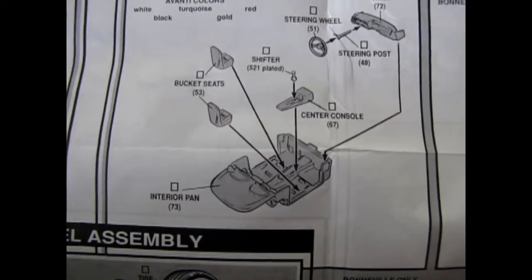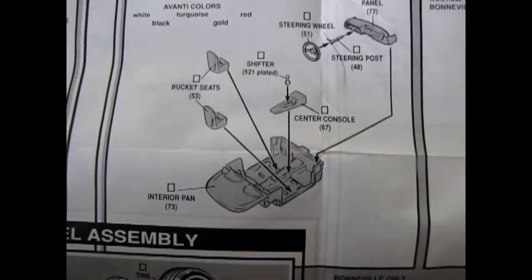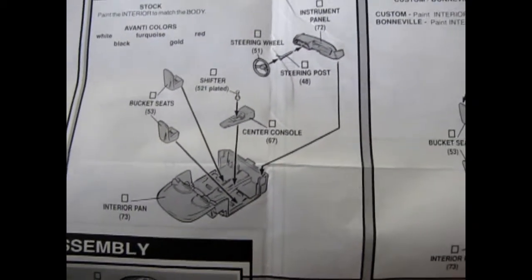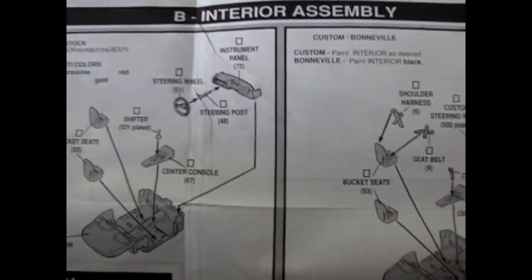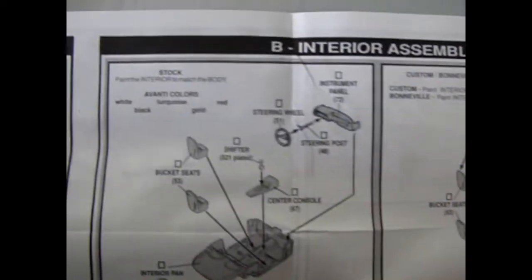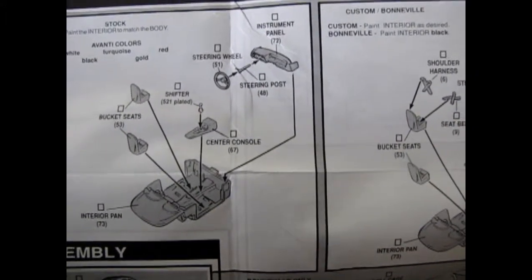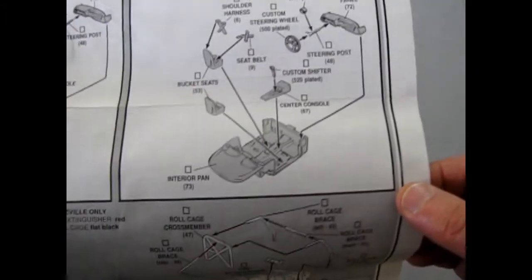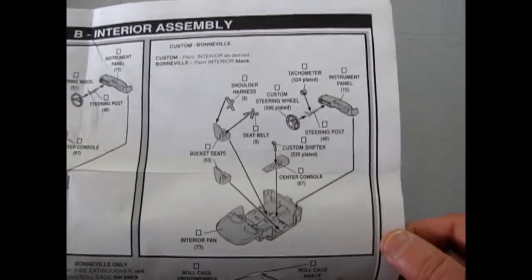Anyway, so our interior is sort of a pseudo bucket. It does have the cutouts for the door, which is nice because you can paint the back little bucket portions. You get the bucket seats, center console and a shifter, the dashboard and steering linkage and all that. It says paint the interior to match the body. Avanti colors: white, turquoise, black, gold, and red. My dad painted one red. It is a nice kit. It goes together well. I know because my dad built one.